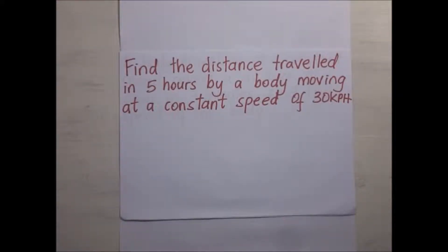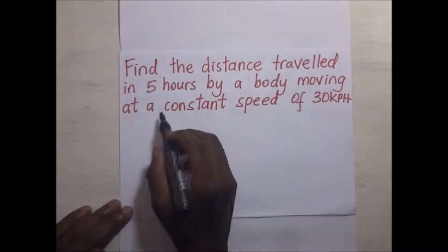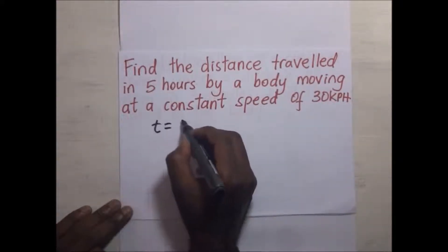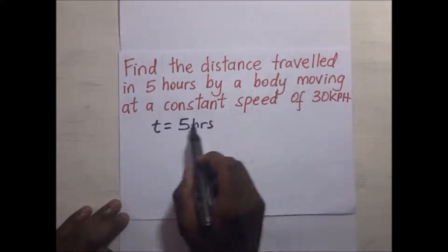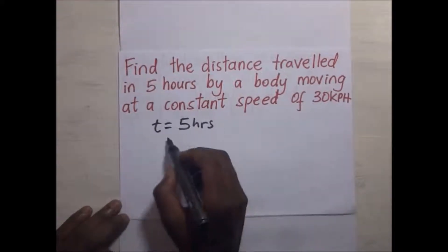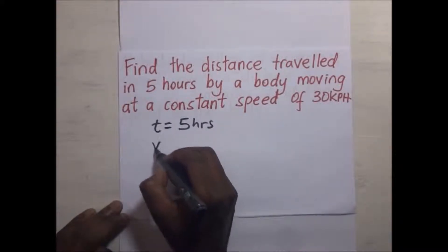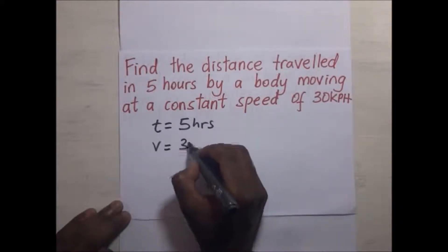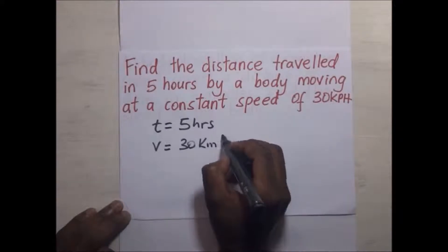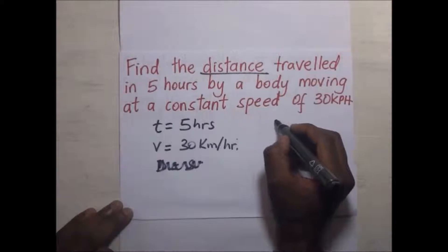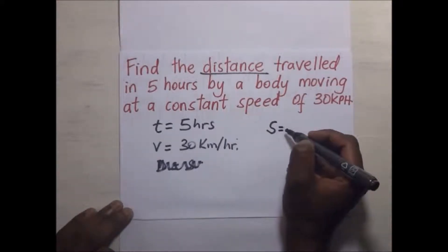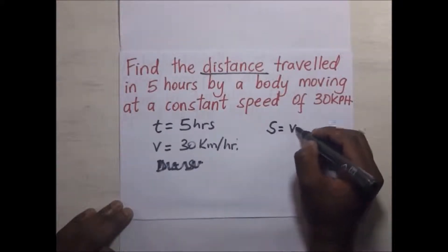Let's head into a few examples. Find the distance traveled in five hours by a body moving at a constant speed of 30 kilometers per hour. To summarize: time is five hours, and speed V equals 30 kilometers per hour. They are asking us to find the distance S, which equals speed V times time.